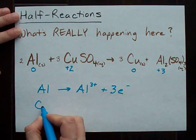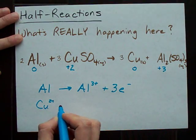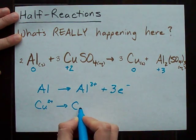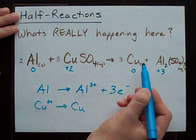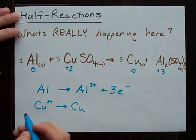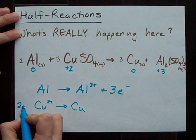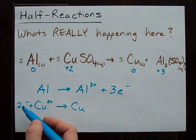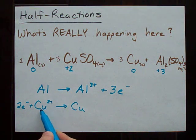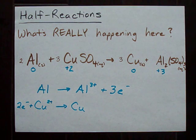The copper, on the other hand, started as two plus and ended as an uncharged species. See? Cu two plus Cu. To do that, it had to combine with two electrons. In this case, two electrons plus a copper two ion make a copper uncharged atom.